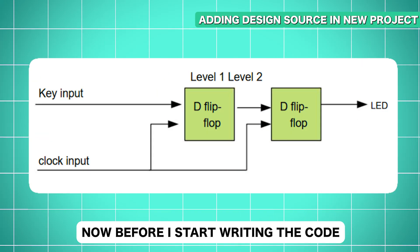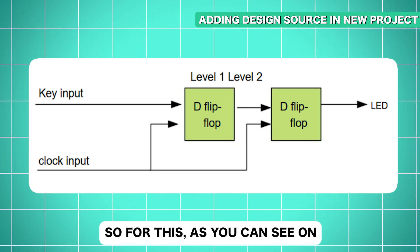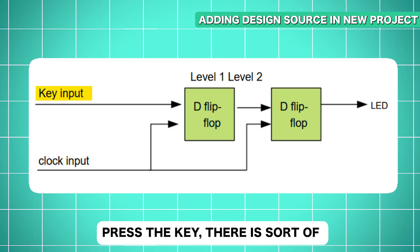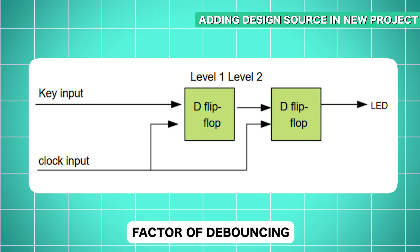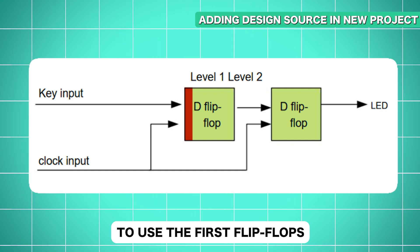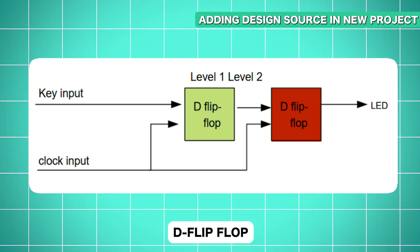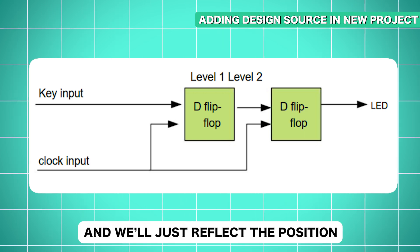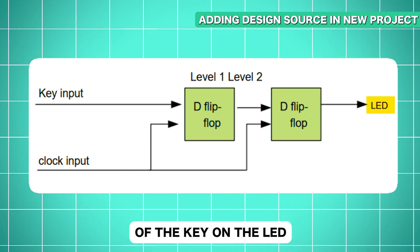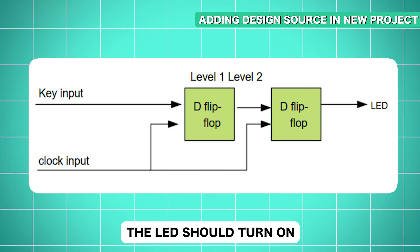Before we start writing the code, I want to explain a bit. As you can see on screen, I'm going to use two flip-flops because when we press the key, there is a debouncing factor. To remove that, we are going to use a first flip-flop and then pass the output of that first D flip-flop to another D flip-flop. Then we'll just reflect the position of the key on the LED — so when we press the key, the LED should turn on.